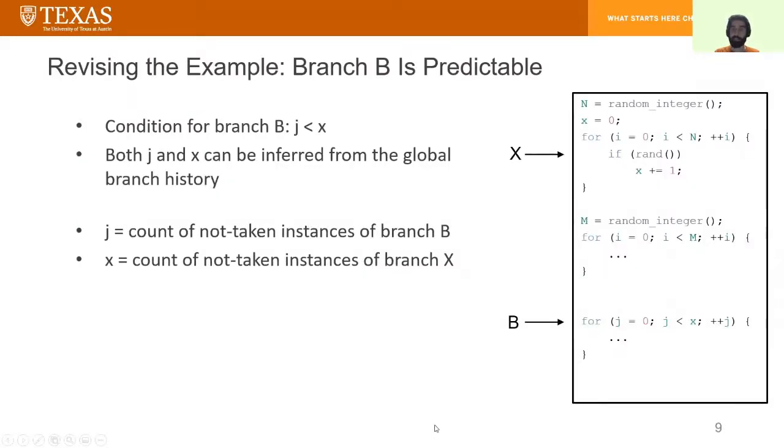Let's continue using our noisy example to see how BranchNet works. Branch B is actually predictable if we can know the values of J and X and we can do the comparison inside the predictor. The good news for us is that both variables J and X could be inferred from the global branch history. J is simply the count of not taken instances of Branch B and X is simply the count of not taken instances of Branch X.